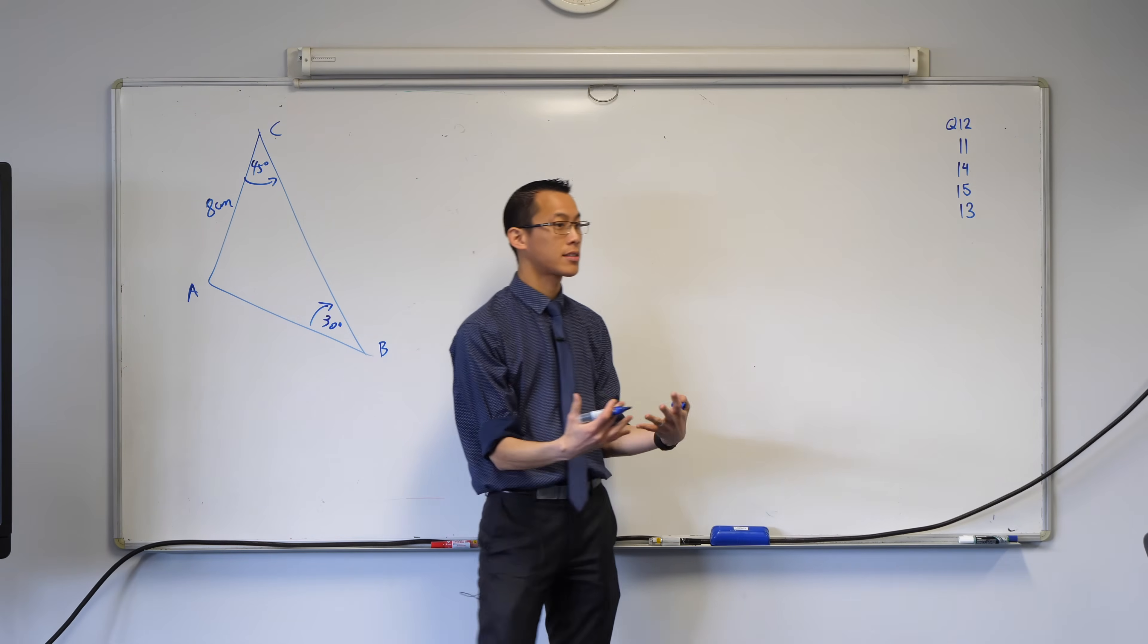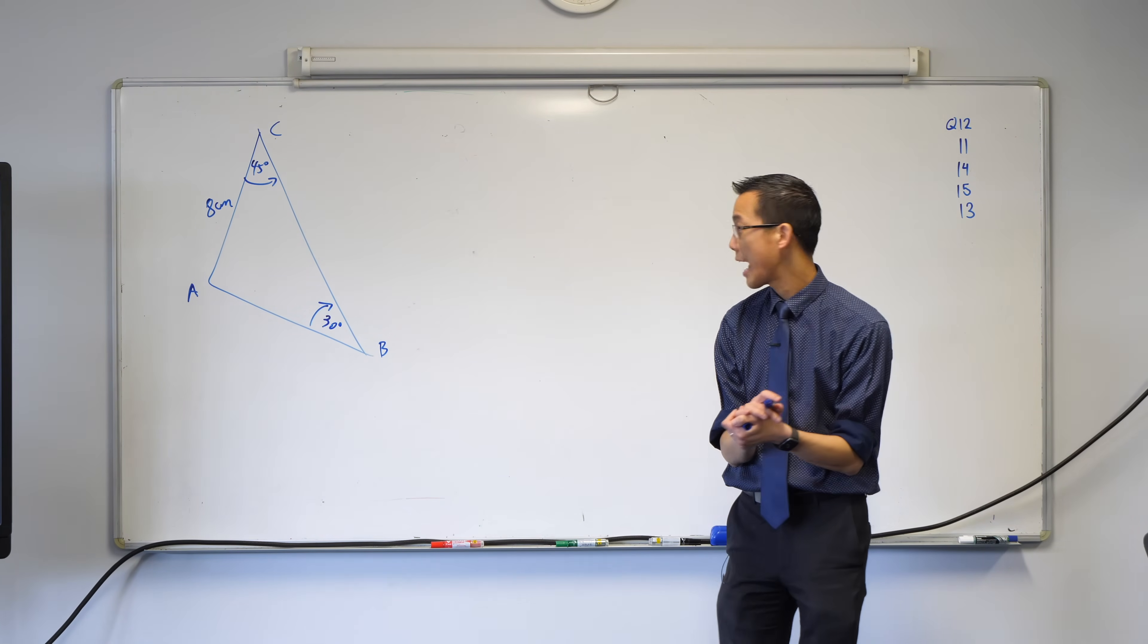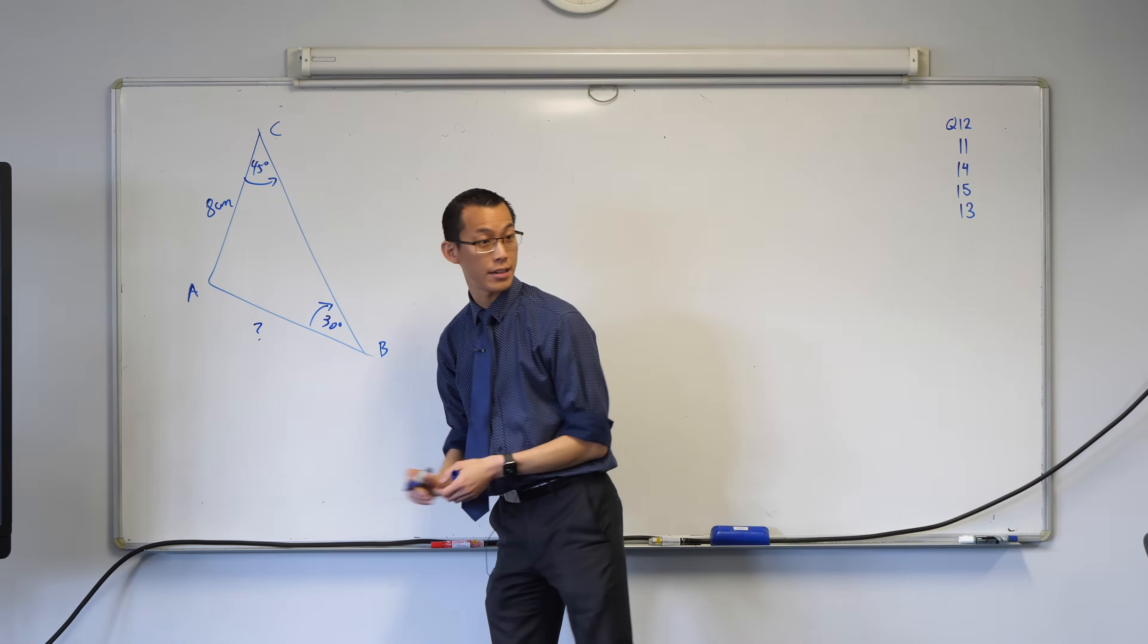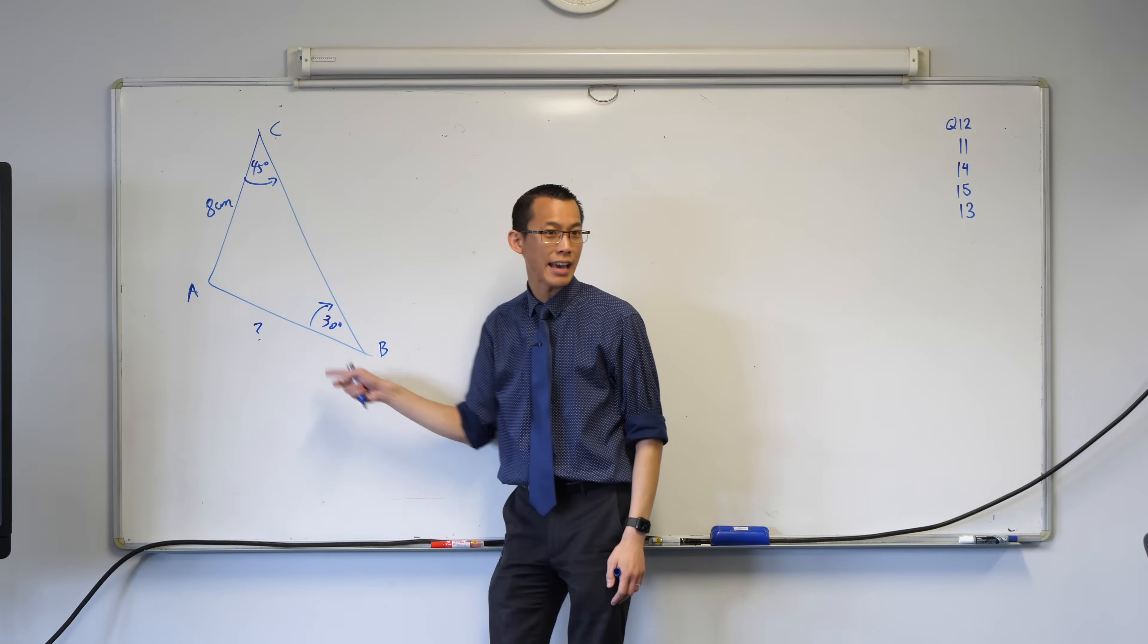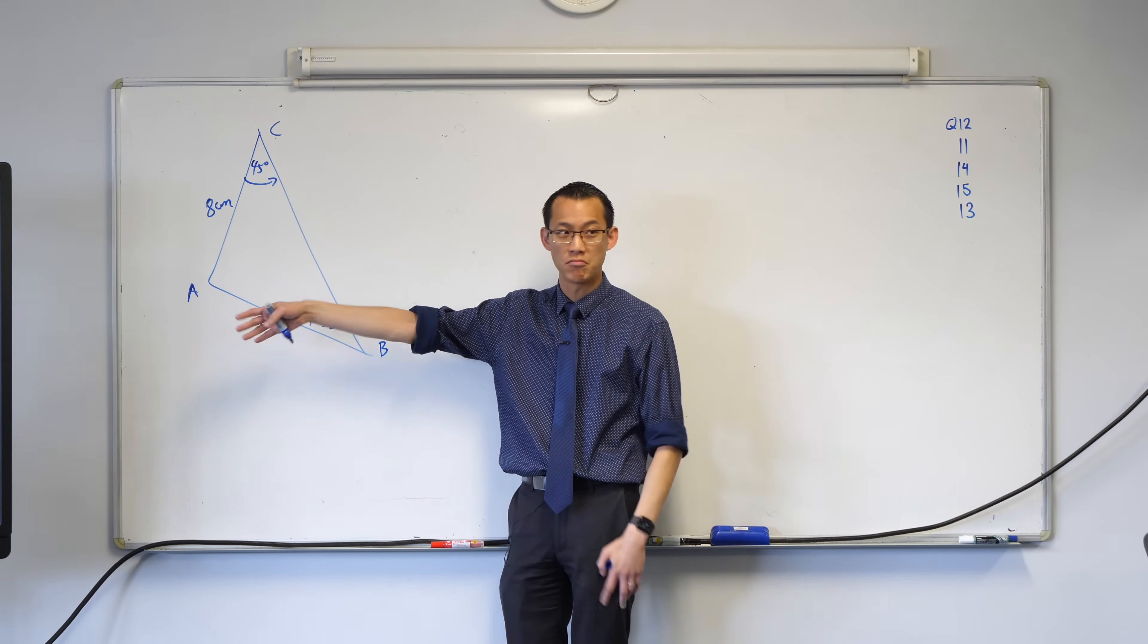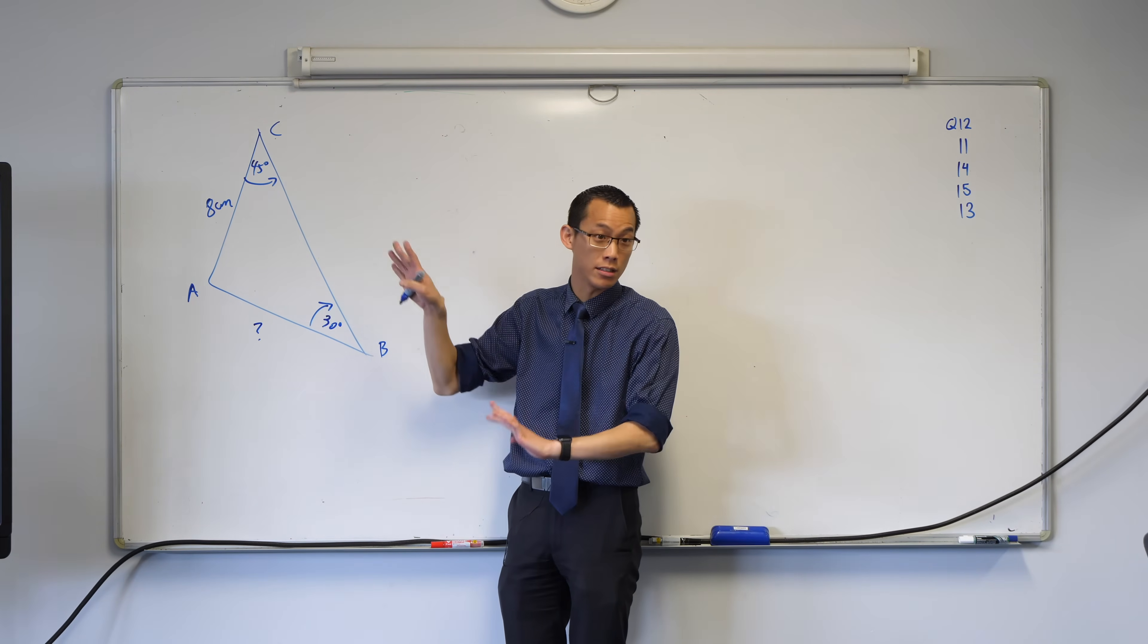The question asks us to determine the length of AB, this side down here. Now I could give it another letter like X, but I can just call it AB. AB is a way to describe it. I don't need to add more notation—I'd rather have as little as I can.